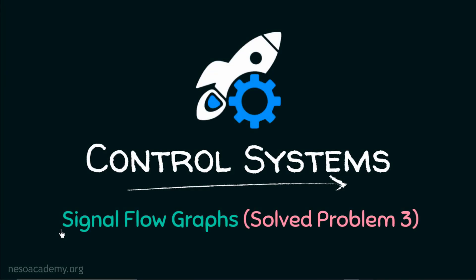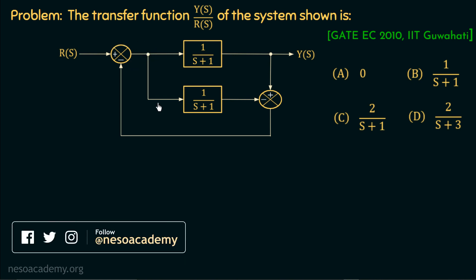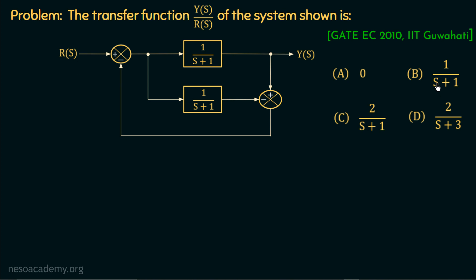In this presentation, we are going to discuss problem number 3 on signal flow graphs. The transfer function Ys over Rs of the system shown is given. One block diagram is given to us. There is a block of gain 1 over s plus 1 in the forward path, a summing point followed by a takeoff point having gain 1 over s plus 1, given as input to a summing point with a negative sign. There is a takeoff point at the output with unity gain given as input with a positive sign, and the output of this summing point is given as input to another summing point with a negative sign. This is a GATE EC 2010 multiple choice question given by IIT Guwahati.